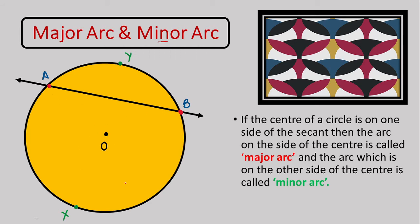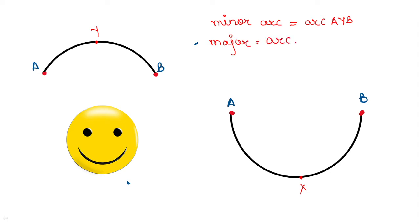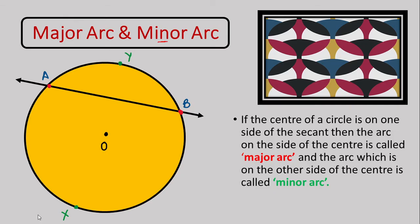The arc containing the center is the major arc. Now when writing the name of the arc, both the minor and major arcs were named AB, so to distinguish them, we insert an additional point. For the minor arc, you write arc AYB, and for the major arc, you write arc AXB — inserting an alphabet in between the two end points. The major arc contains the center while the minor arc does not.